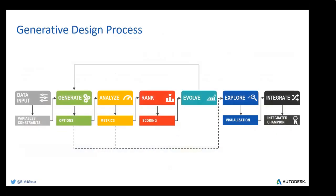The generative design process can be documented this way. You start by setting up your data — variables and constraints you already know before thinking about the problem. Then you start generating the geometry: a computational model. This model gets analyzed — what is the surface area, how many elements are in my view angle, how far do I need to walk from one point to another? Everything approachable by mathematics is analysis. You get metrics, rank them by giving a score, then evolve and explore as a human again, using human expertise to explore the results and integrate them into the BIM model.